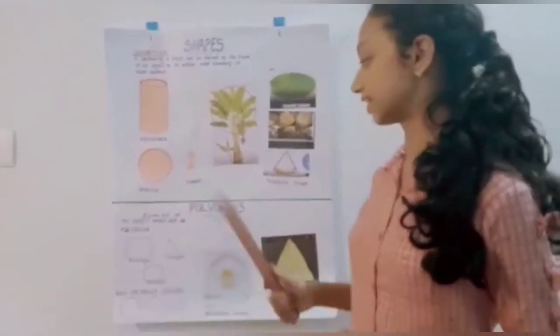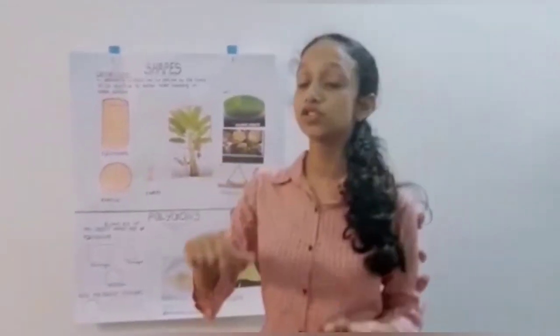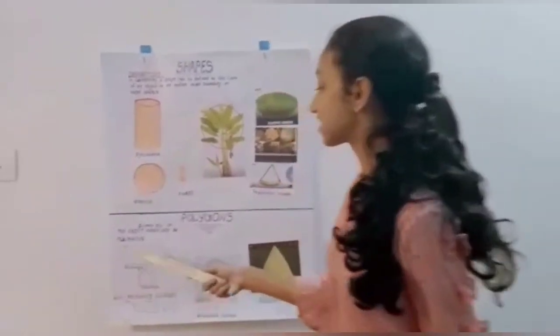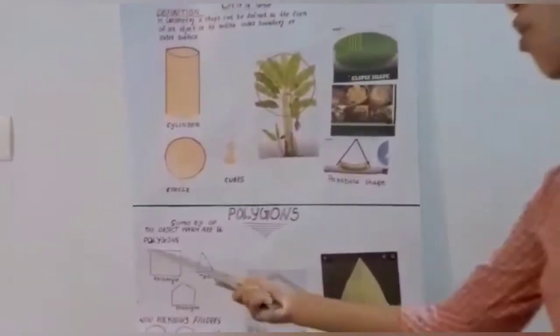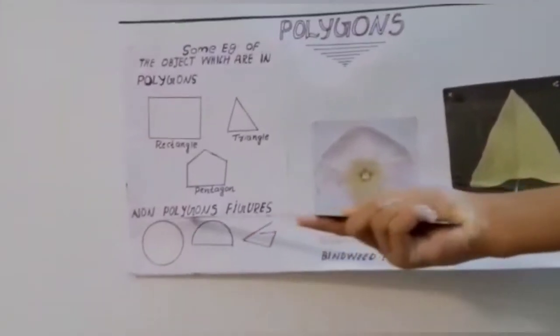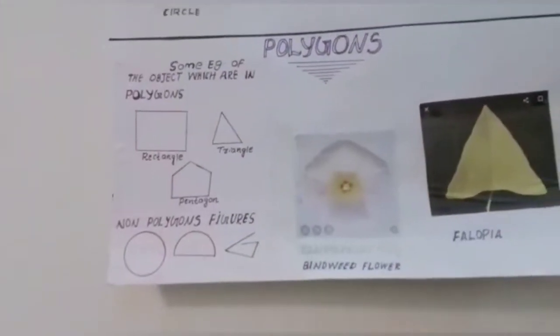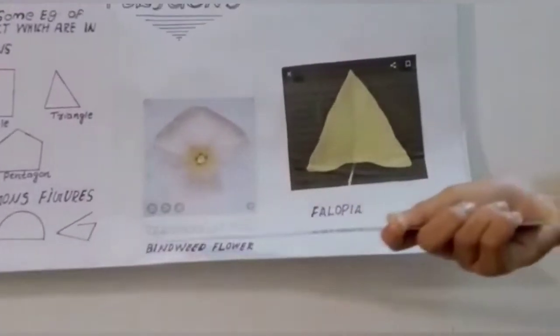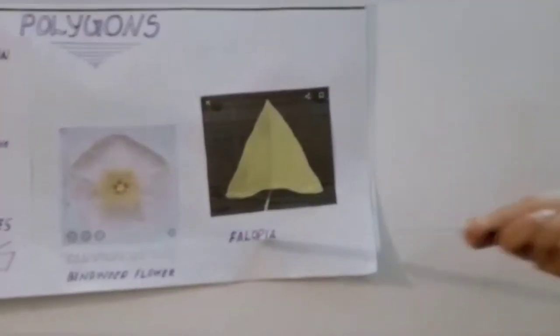Next we can go to polygons. Polygon is a closed plane figure made by three or more sides that are line segments. These are some examples for polygon. These all have line segments and sides. And these are some examples which are not a polygon. In nature, these are some examples for polygon. They are lily flower and frangipani.